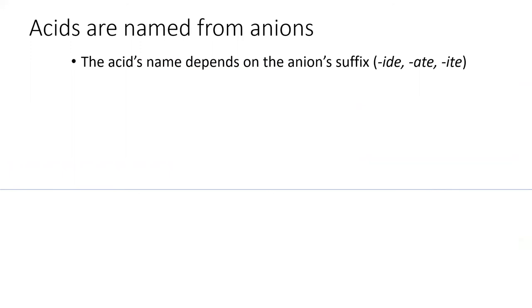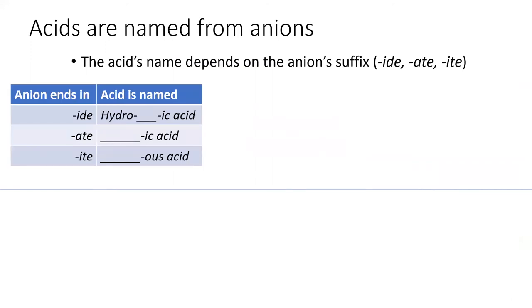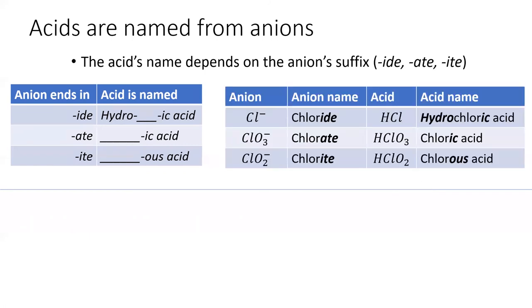The acid's name depends on the suffix of the anion, which could be "-ide," "-ate," or "-ite." If the anion ends in "-ide," the acid is named "hydro-[blank]-ic acid." If the anion ends in "-ate," the acid is "[blank]-ic acid." If the anion ends in "-ite," the acid is "[blank]-ous acid." For example: chloride becomes hydrochloric acid, chlorate becomes chloric acid, and chlorite becomes chlorous acid.